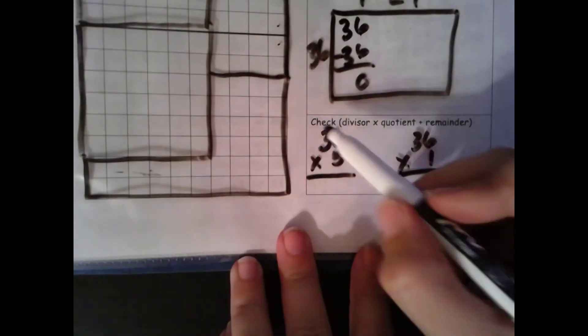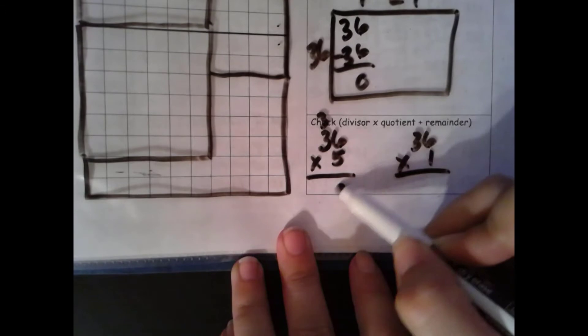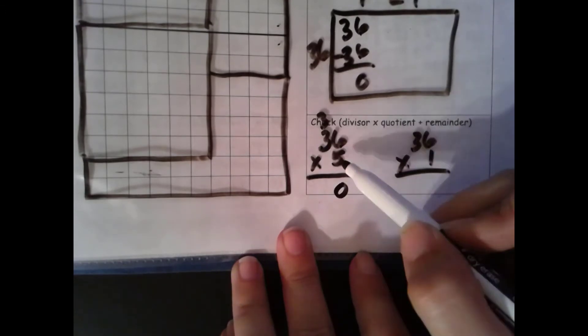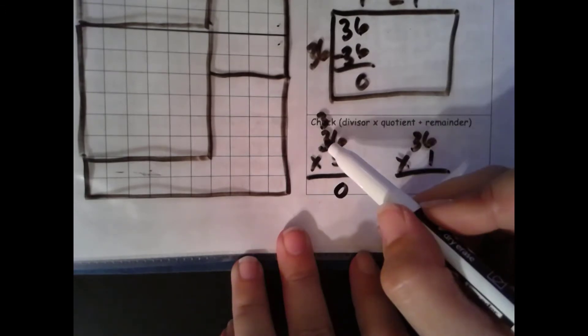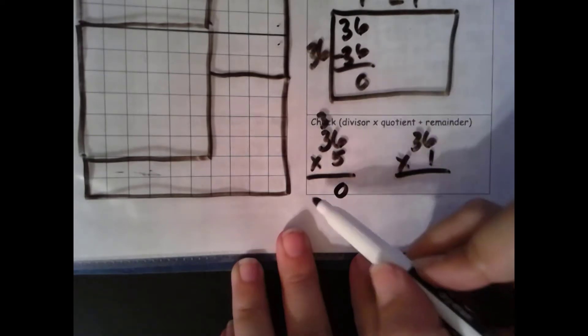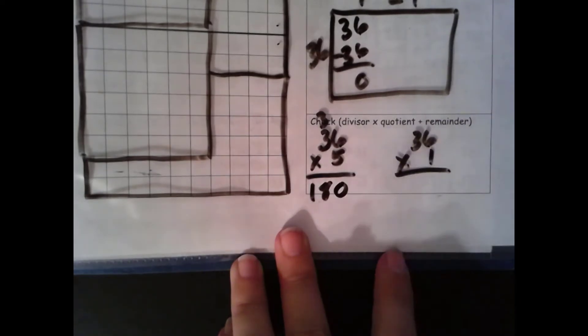5 times 6 is 30. 5 times 3, 5 groups of 3 tenths is 15 tenths plus 3 more tenths is 18 tenths or 180.